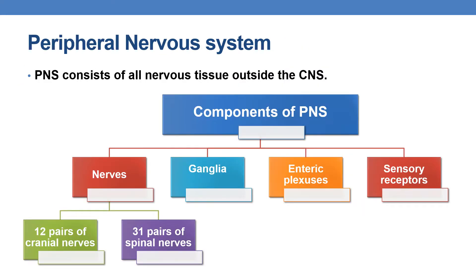Coming to the Peripheral Nervous System: the PNS consists of all nervous tissue outside the central nervous system. Coming to the components of the Peripheral Nervous System, there are mainly four components: nerves, ganglia, enteric plexus, and sensory receptors.